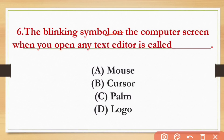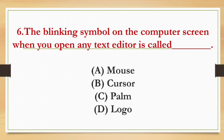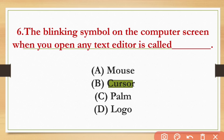The blinking symbol on the computer screen when you open any text editor is called — the options are mouse, crossword, and palm logo. The blinking symbol on the computer screen is the cursor.